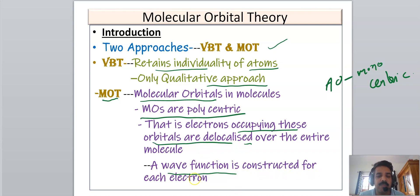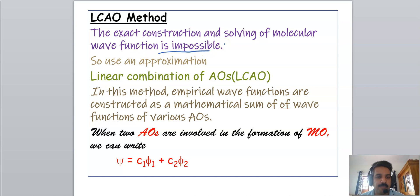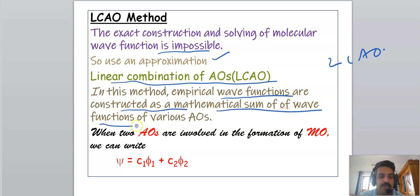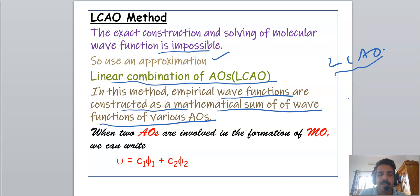A wave function has to be constructed for each electron in the case of a molecule, but solving the molecular orbital wave function exactly is practically impossible. So we use an approximation called the Linear Combination of Atomic Orbitals, or LCAO. In this method, a trial wave function is constructed as a mathematical sum of wave functions of various atomic orbitals. For example, with two atomic orbitals: ψ = c₁φ₁ + c₂φ₂.